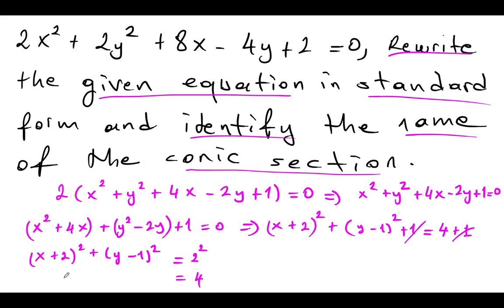You can say even 4. x plus 2 squared plus y minus 1 squared equals 4. I think that's clear that it's a circle whose center is negative 2 comma 1 and radius is 2 units. That's it.